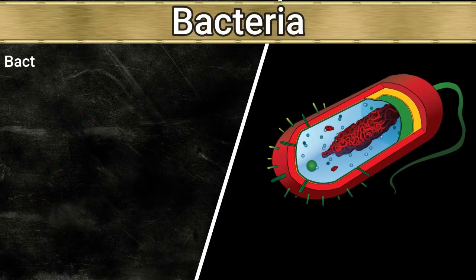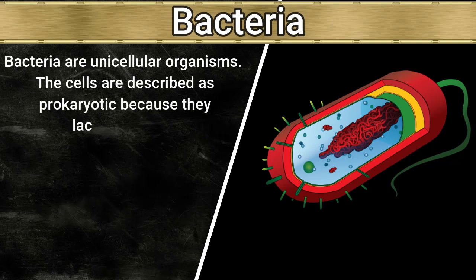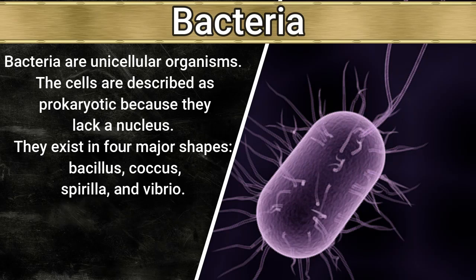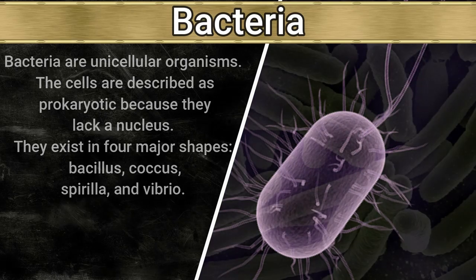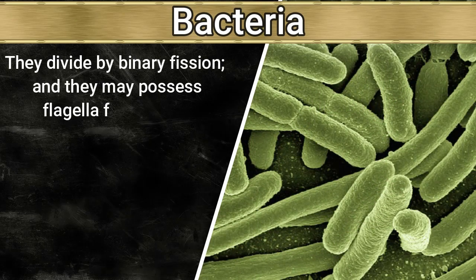Bacteria are unicellular organisms. The cells are described as prokaryotic because they lack a nucleus. They exist in four major shapes: bacillus, coccus, spirilla, and vibrio. They divide by binary fission and may possess flagella for motility.